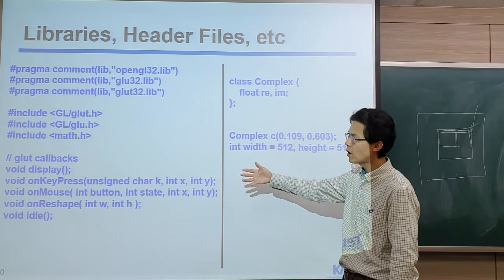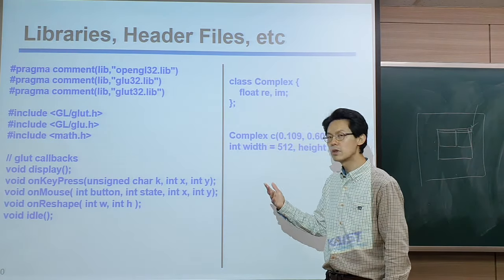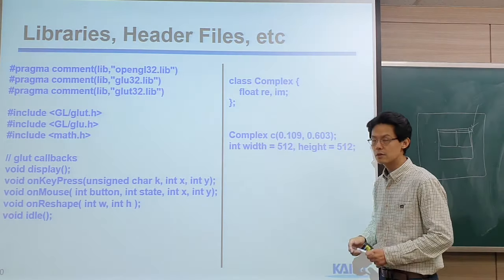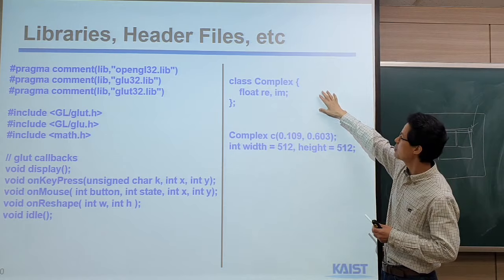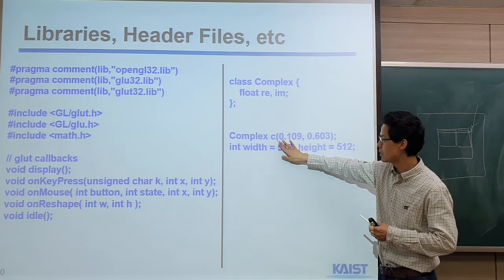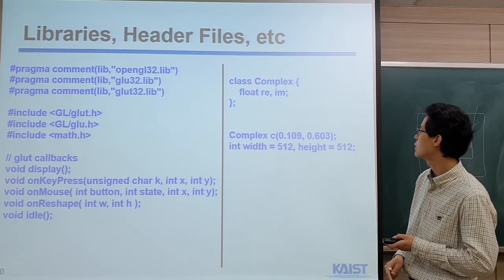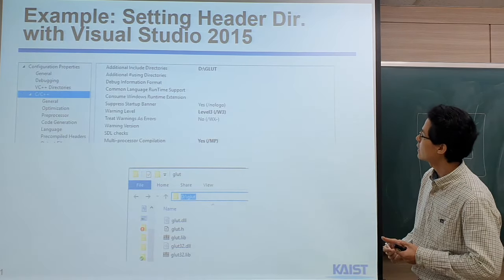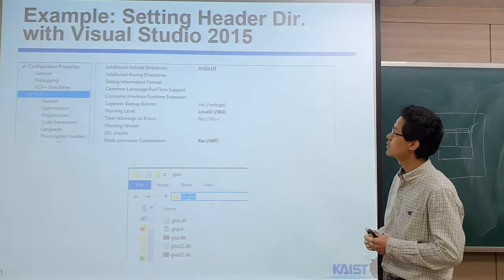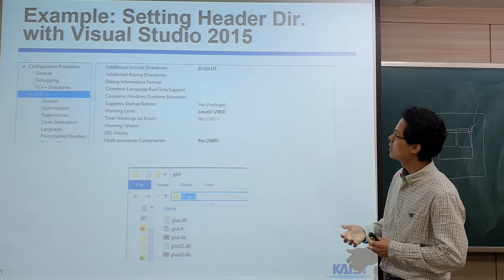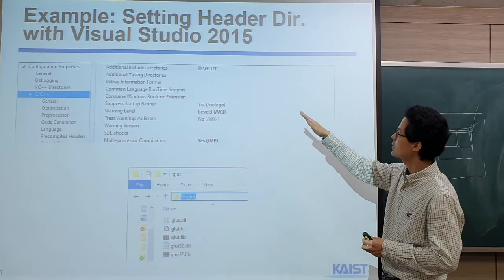The concept of callback is very common in Windows-based programming, and even in Android programming. We define the complex callback function here. The reshape function, which we talked about last time, uses variables for window width and height. We're using Visual Studio 2017, but I'm explaining things based on 2015 — the TA said they are similar to each other and will explain based on 2017.